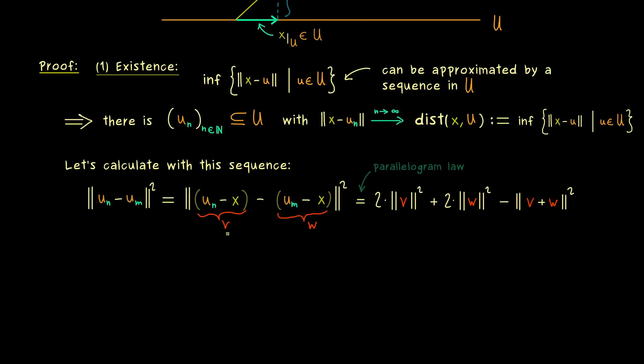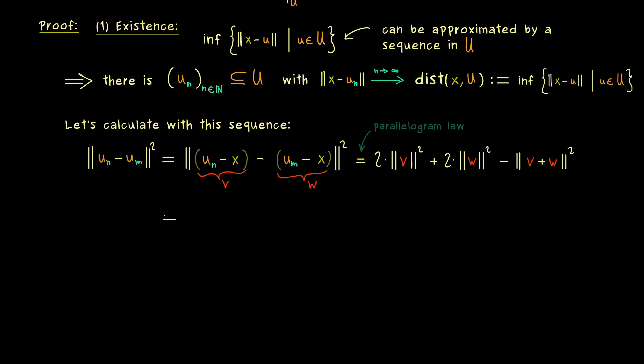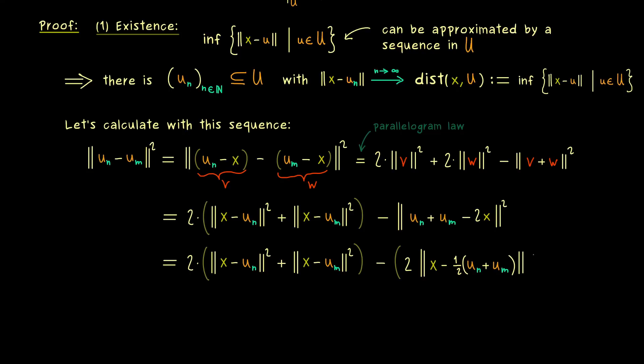So please note again, here we have used that we actually have an inner product space. And now in the next step let's go back to our original vectors u_n, u_m and x. This means the first part here for v we can substitute x minus u_n and for w we have the same just with u_m. And now these two parts should not be a problem because by assumption we already know that they will converge to our distance x to u. Therefore the crucial question now is what happens to the last part? So v plus w is just u_n plus u_m and minus 2 times x. And naturally we can also make this nicer by bringing x to the front. And moreover we can also pull out this factor 2 from the norm. Then we just get x minus 1 half the addition of u_n and u_m.